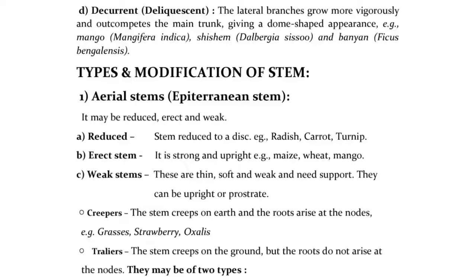Types or modification of stem: 1. Aerial stems — Epiterranean stem. It may be reduced, erect, or weak. A. Reduced stem — reduced to a disc, e.g., Radish, Carrot, Turnip. B. Erect stem — it is strong and upright, e.g., Maize, Wheat, Mango. Weak stems are thin, soft and weak and need support; they can be upright or prostrate.